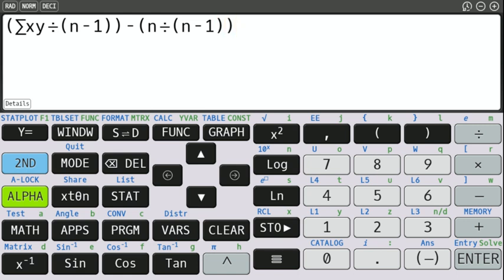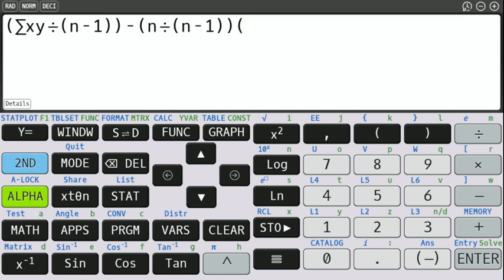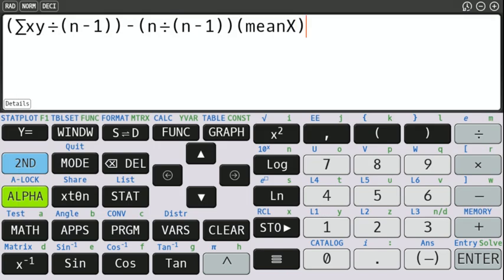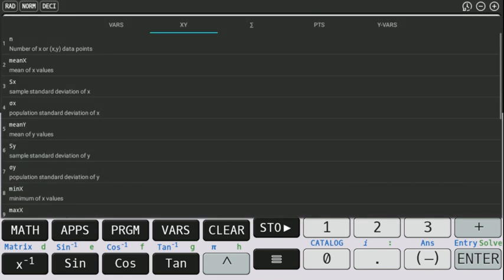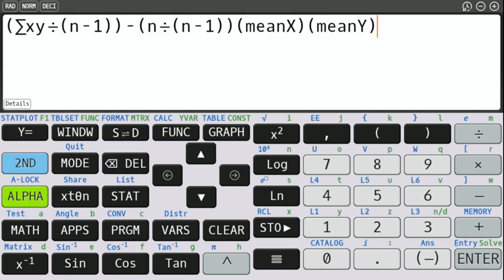And then it's the product of that times the mean of the X's. So let's see where that is. Vars mean X, it's number two on here. Close that parentheses. Mean Y. It's down a little bit further. Number five, close that parentheses. And in theory, that will give you the correct sample covariance.